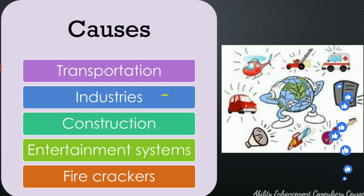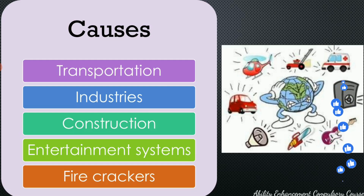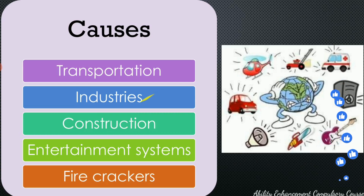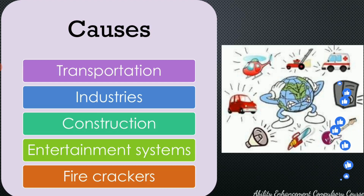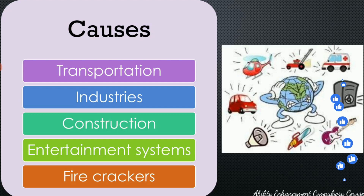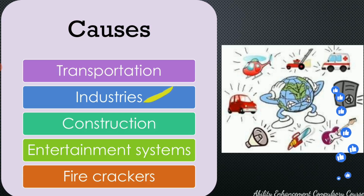The second reason for noise pollution is industry — industrial machinery, the equipment, the operation of the equipment, any kind of movement of equipment, any kind of industrial activity is a source of noise pollution. That is one of the reasons why there is a strict ban on establishing industries in residential areas. You can't set up industries which have heavy equipment or heavy machinery in residential areas, and one of the reasons is the noise pollution that it causes.